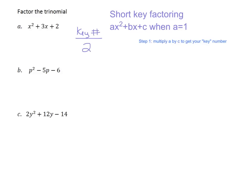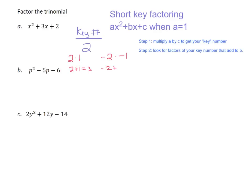Now we're going to look for factors of that key number that add to your middle term. The factors of 2 are going to be 2 times 1, and we also have negative 2 times negative 1 — both of those multiply up to positive 2. Now we want to look for factors that add to our middle term, 3. What is 2 plus 1? That equals 3. And negative 2 plus negative 1 equals negative 3. So the factors that add to our middle term are going to be 2 and 1.